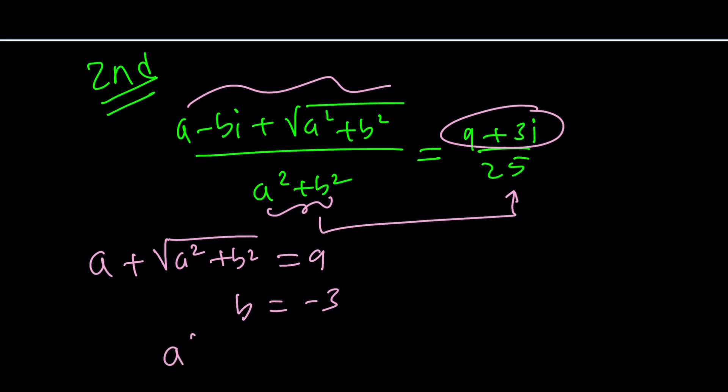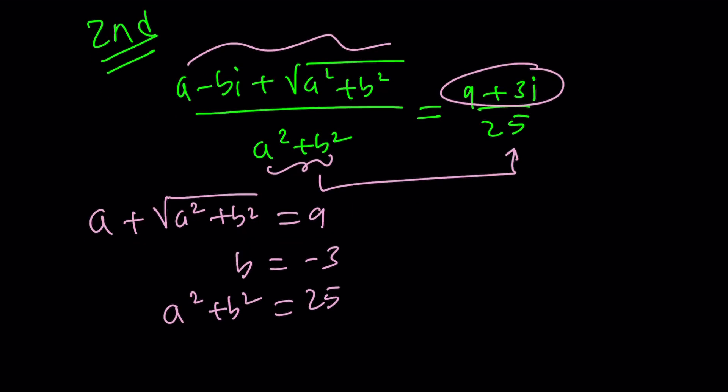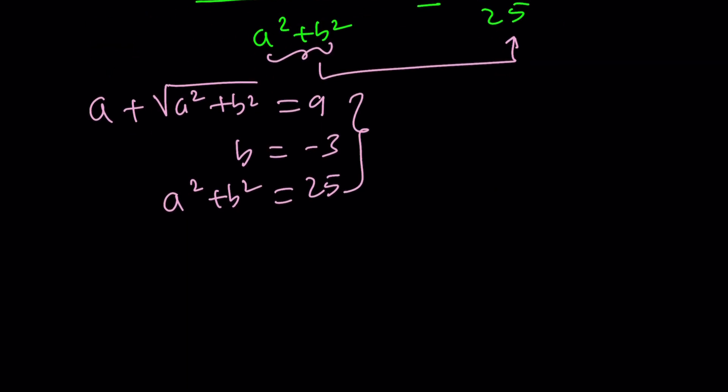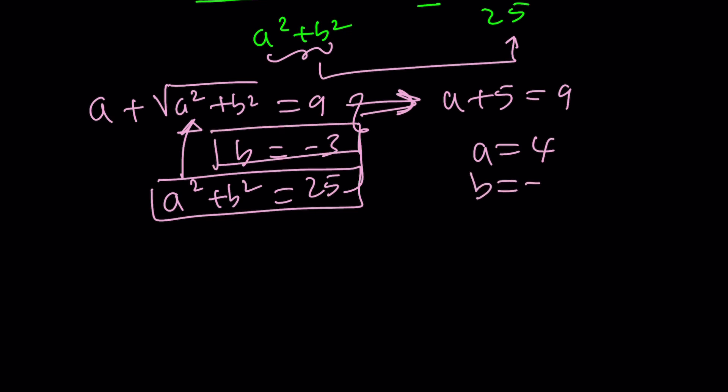And of course I also want A squared plus B squared equals 25 at the same time. So I have three equations but two variables so they have to be consistent. So just solve any of these. This is probably a good one to start with. Square root it it's 5 and from here I get A plus 5 equals 9. That means A equals 4. But we already got B equals negative 3 and that satisfies this equation so bingo.